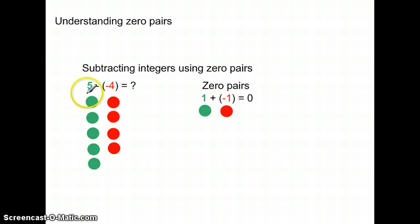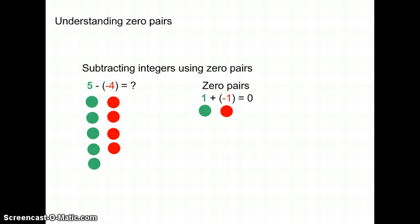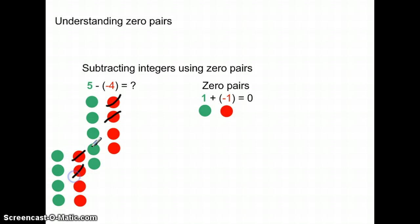Let's take this concept and look at another problem. Here I have 5 positive integers and 4 negative integers. I can use zero pairs to solve this. In this particular problem there are no negative 4s to take away from this side, but using zero pairs I can solve this problem. So let me bring in 4 zero pairs. I can take this one away, this one away, this one away, and this one away.